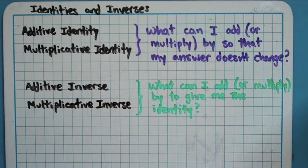But the idea behind an identity is what can I add to something, or multiply if you're doing that, so that your answer doesn't change.